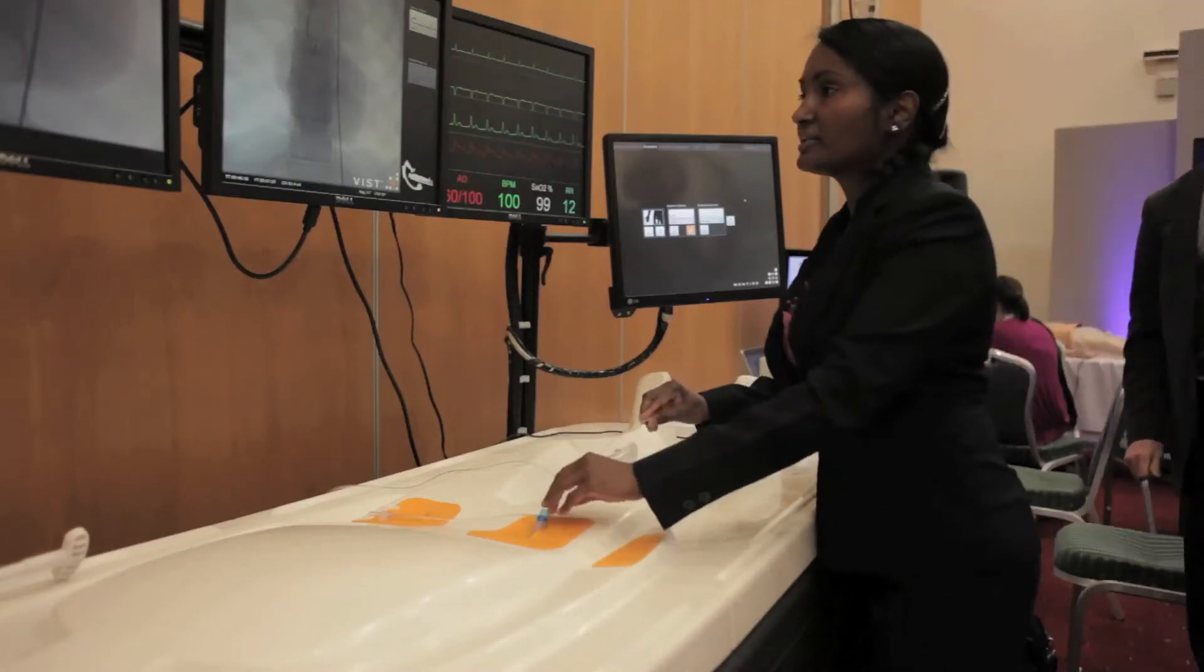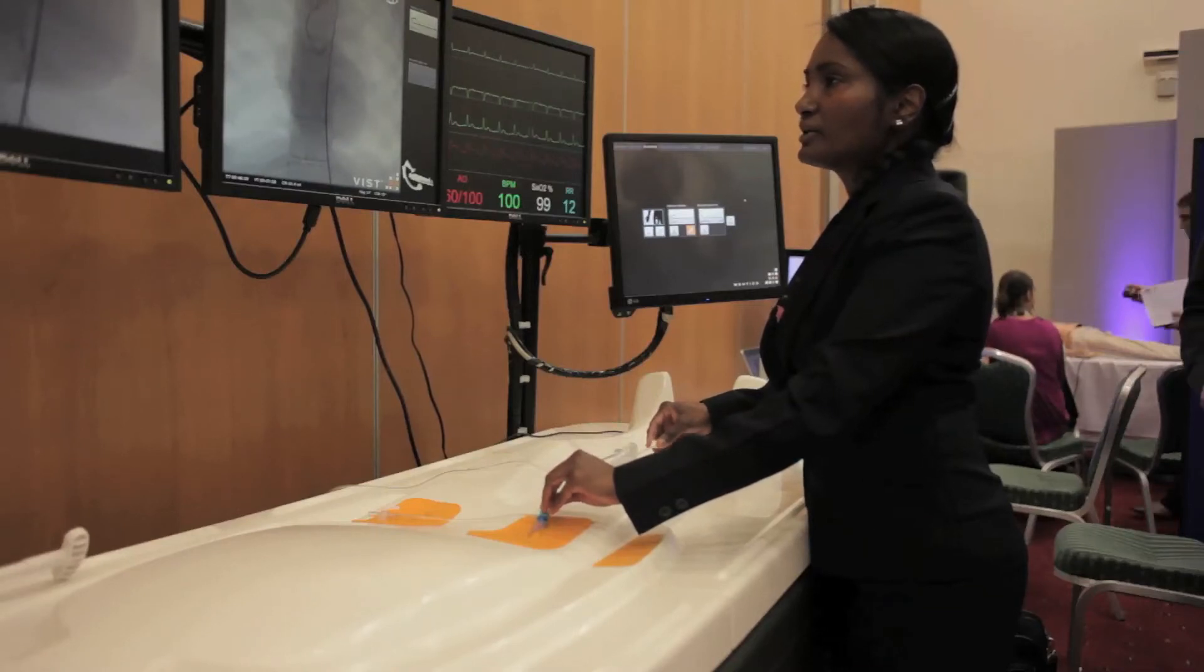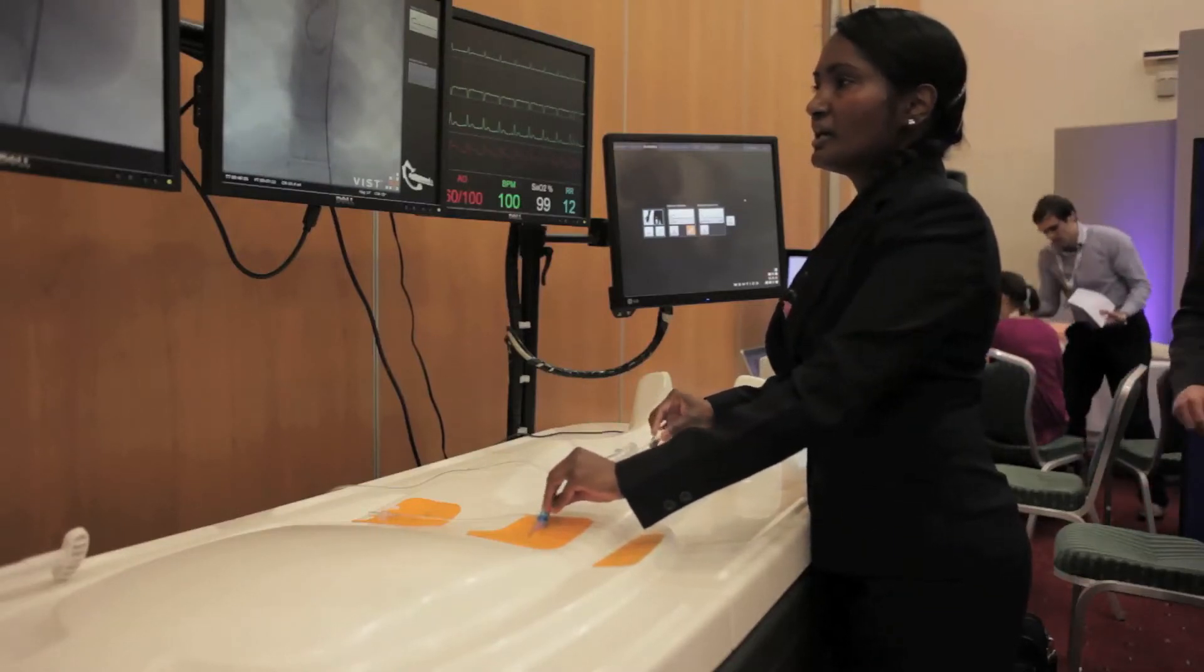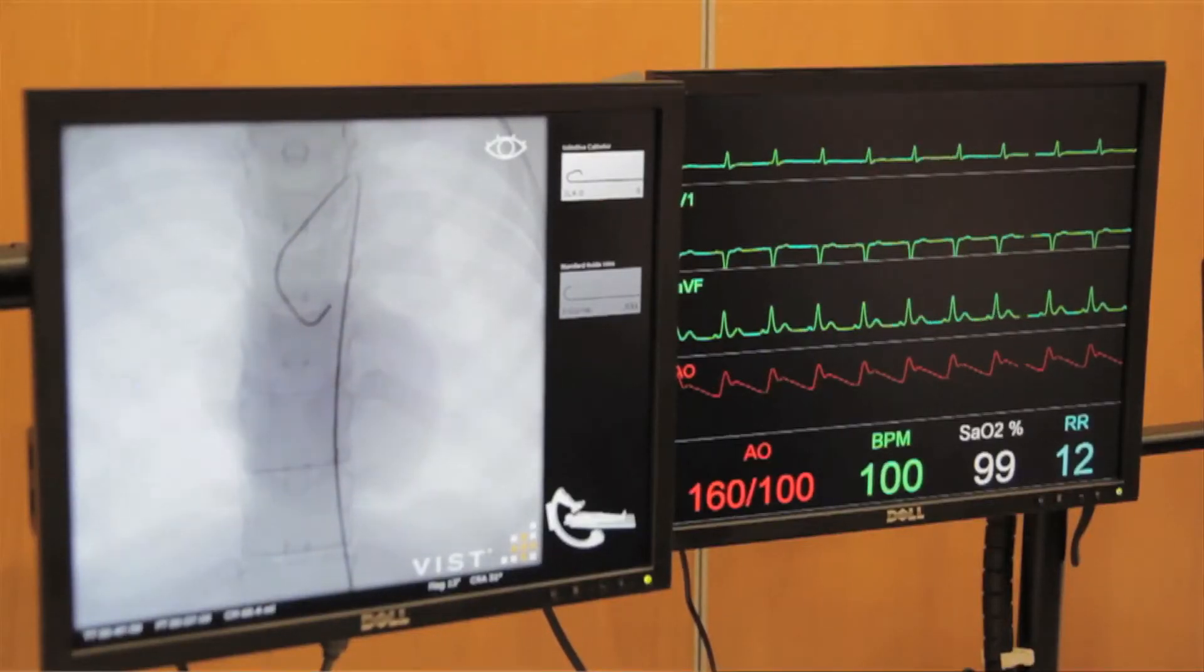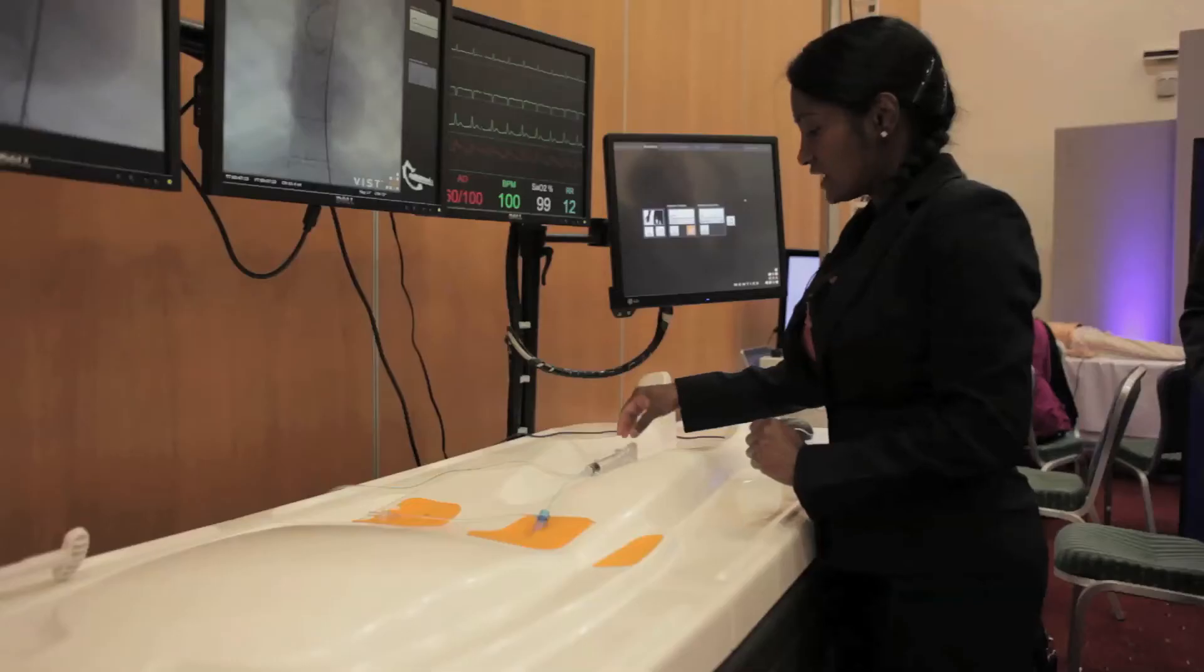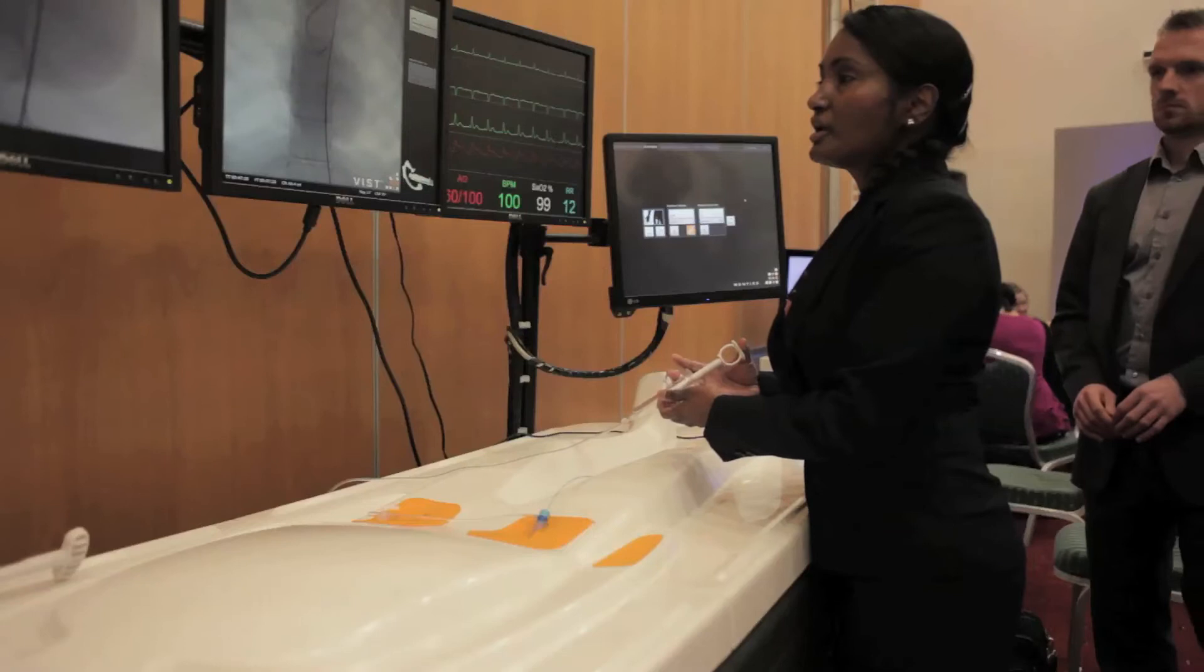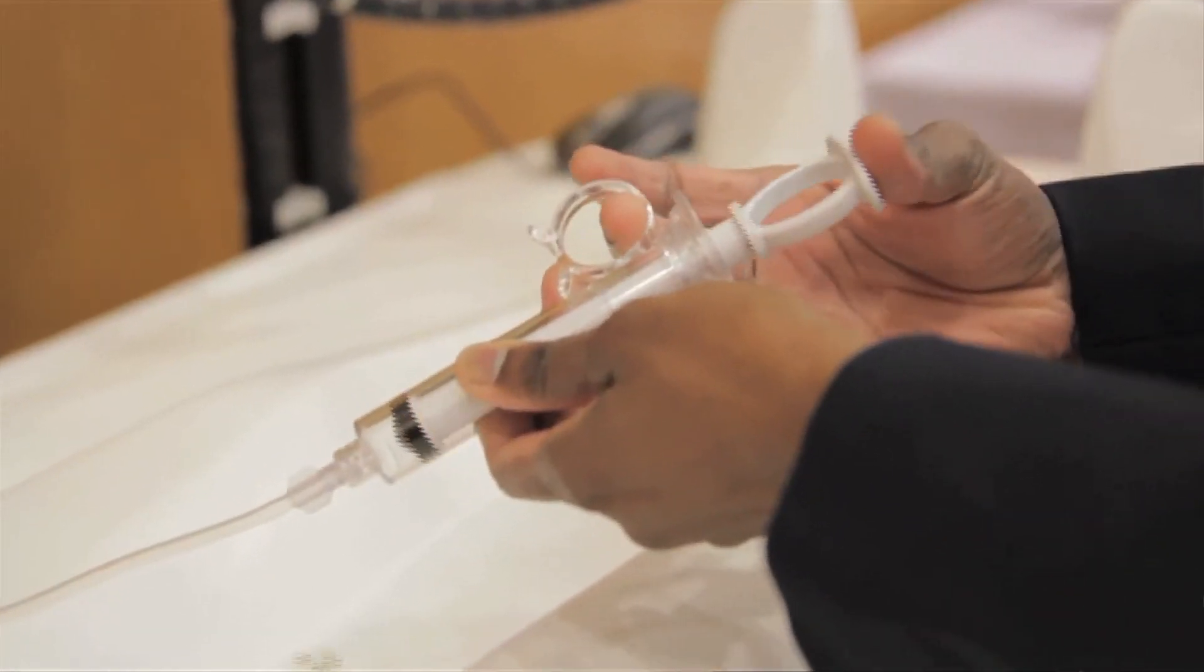And then try and engage the catheter into the left coronary sinus. We are now into the left coronary sinus, so it is a forward movement of the catheter in order to get the tip of the left catheter, which we are using is the Judkins left 4 catheter. It is now sitting well within the left main stem, and we do a test injection to confirm the position of the tip of the catheter in the left main stem.